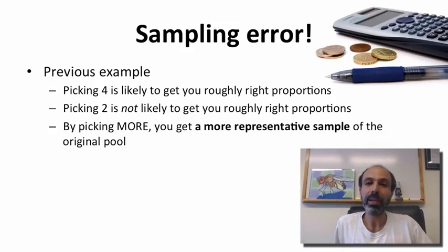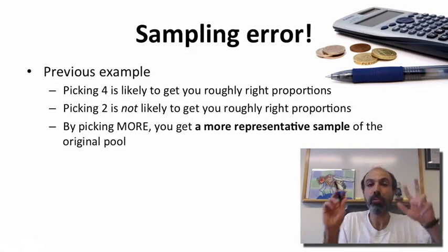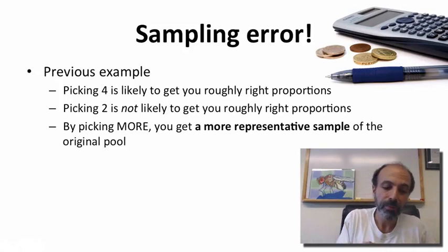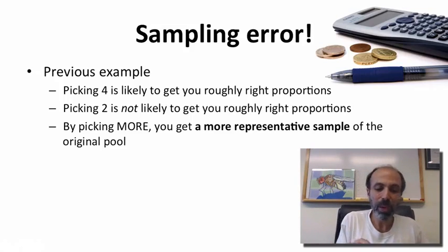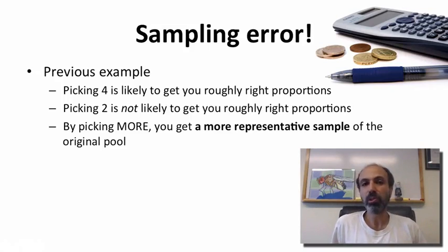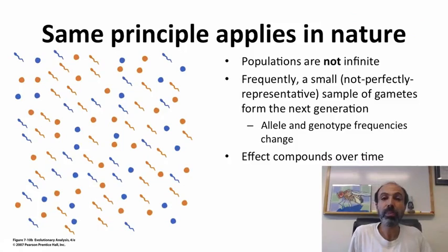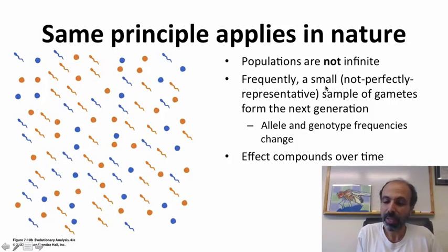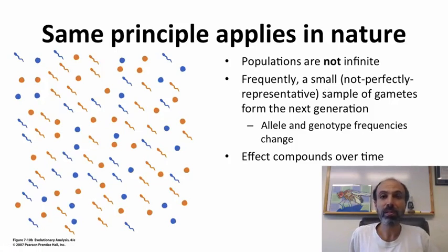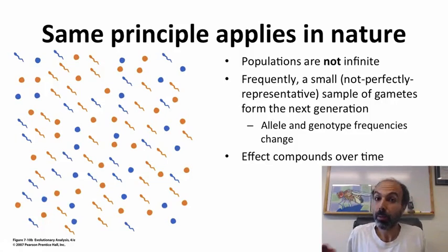This illustrates the point of sampling error. When you picked four marbles it's likely you'd get roughly the same proportions as in the previous bag — it mimics the previous generation. If you pick two, you're very unlikely to get even roughly the right proportions. By picking more, you tend to get a more representative sample of the original pool. The same principle applies in nature. Populations are not infinite, and frequently small samples are not perfectly representative — and these are the ones that form the next generation, causing allele and genotype frequencies to change. This effect can compound more and more over time.